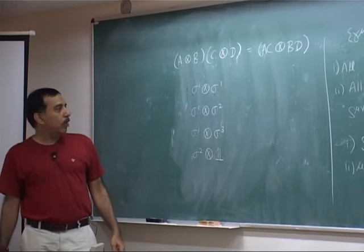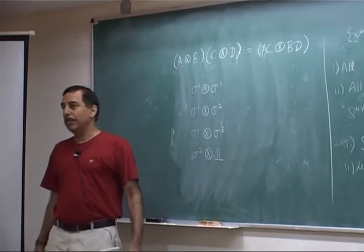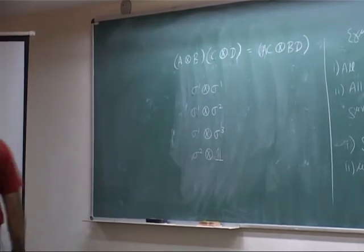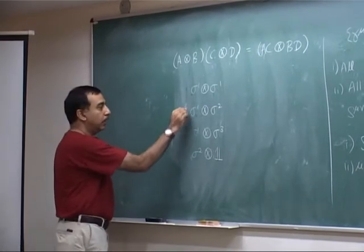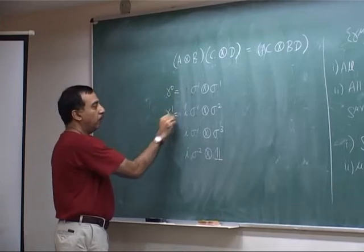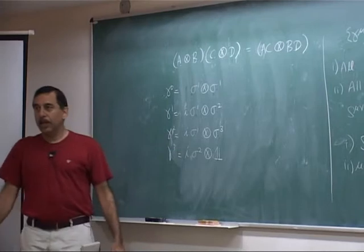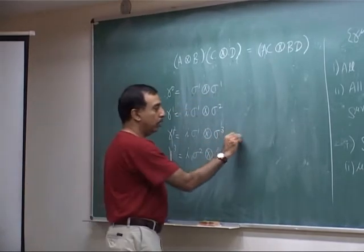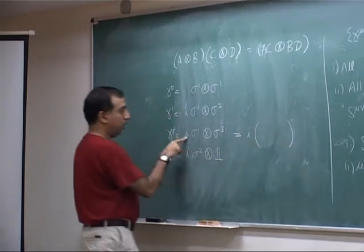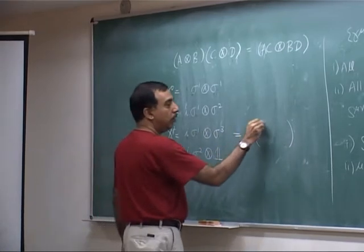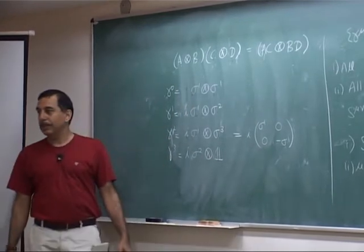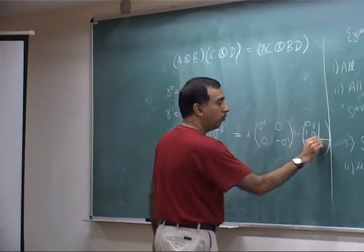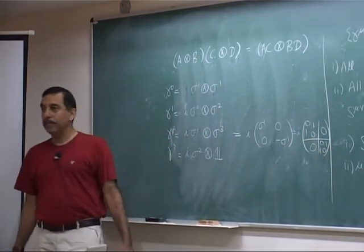A small issue: not all gamma matrices square to plus one — some are supposed to square to minus one. The solution is to multiply by i. As a concrete example, let's do gamma 2: i times sigma 3 cross sigma 1. Sigma 3 is diagonal one minus one, so we put sigma 1 in each place. Expanding sigma 1 as zero one, one zero, we get: i times the block matrix with zero sigma 1 in the top-right and minus sigma 1 in the bottom-left. That's the answer.